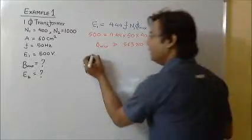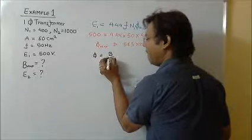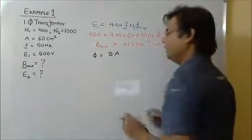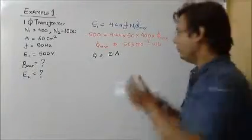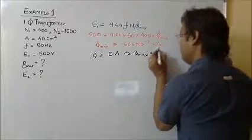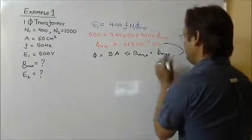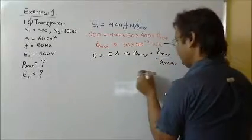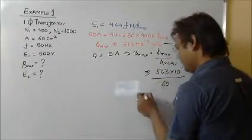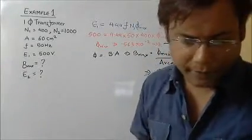Again we know one more formula that φ equals B into A. So your B will be Bmax, which will be coming from here divided by the area, which is 0.563 × 10⁻² divided by 60, and this is coming approximately as 9383 lines per cm².